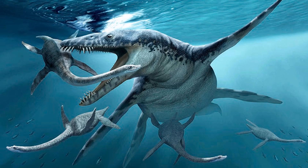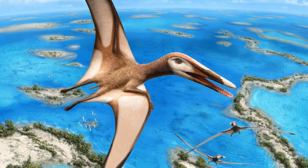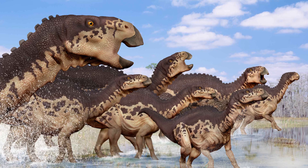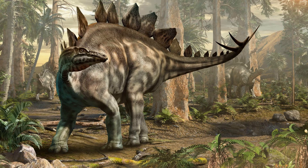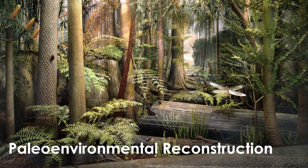But how do we know that these pliosaurs and plesiosaurs lived in the ocean? Or that these dinosaurs lived in a humid forest? Or that these pterosaurs flew between islands over a shallow sea? It's helpful to think about these images as having two parts. They show us ancient organisms — plants and animals that lived long ago — and they illustrate the environments in which those organisms lived. Scientists consider both.